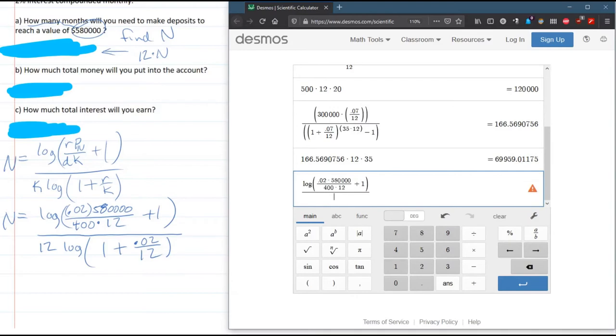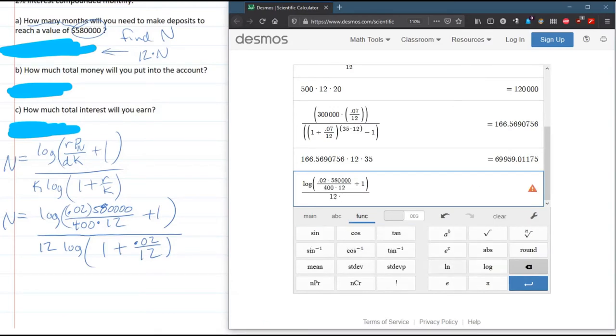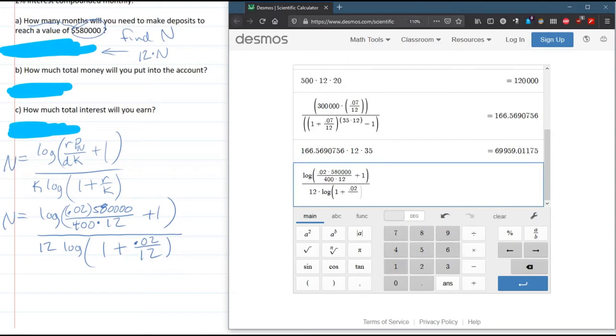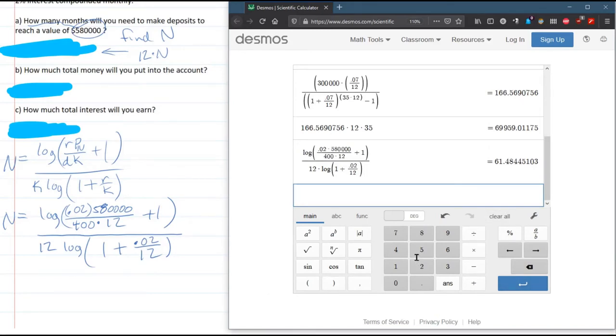And now divided by 12 times, back to function log, back to main, 1 plus 0.02 divided by 12, close parenthesis.